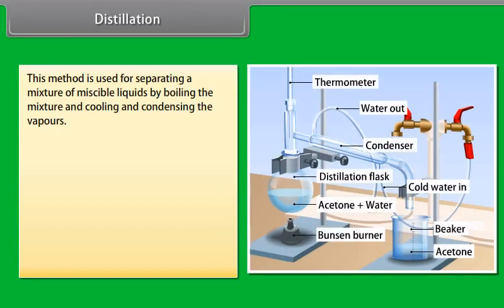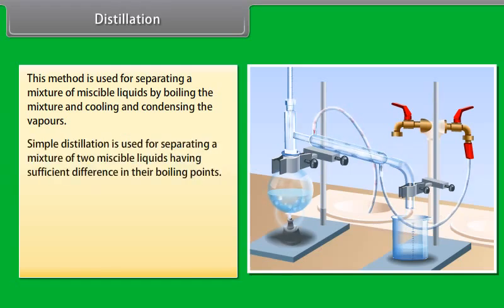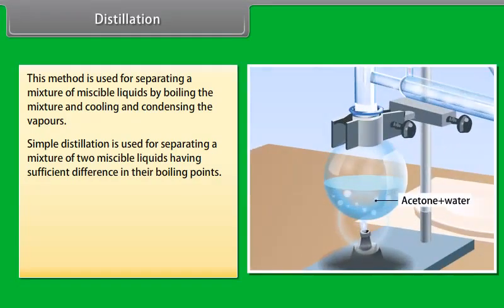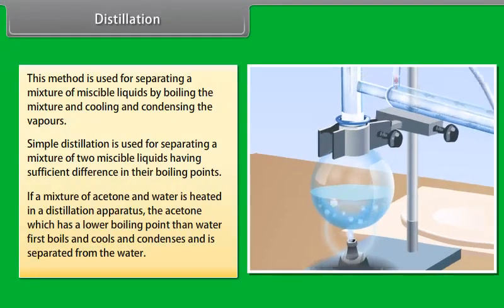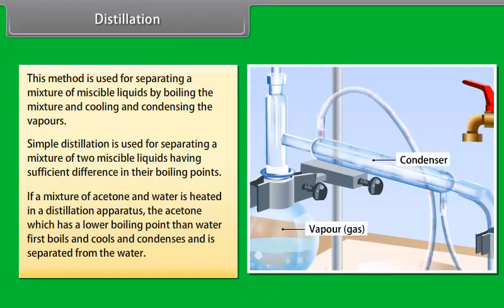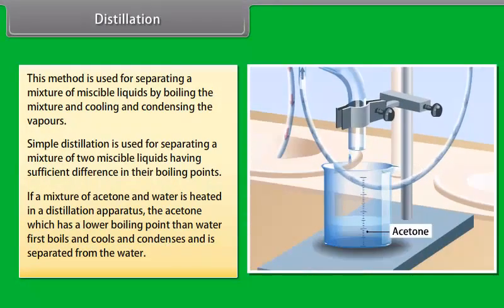Distillation. This method is used for separating a mixture of miscible liquids by boiling the mixture and cooling and condensing the vapors. If a mixture of acetone and water is heated in a distillation apparatus, the acetone which has a lower boiling point than water first boils, cools and condenses, and is separated from the water.